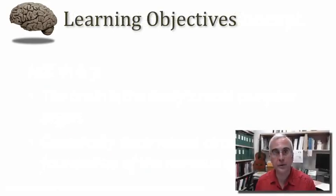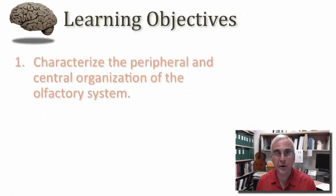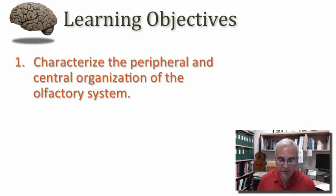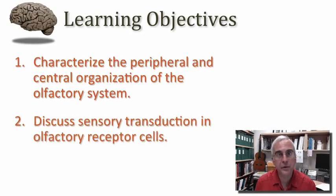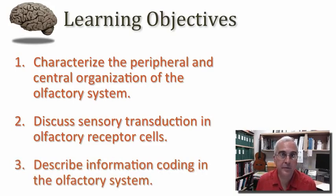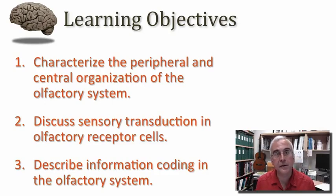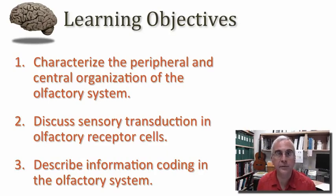My learning objectives for you in this session are threefold. I'd like for you to be able to characterize the peripheral and central organization of the olfactory system. I'd like for you to focus on the critical issue of sensory transduction that's been central to all of our considerations of sensation so far in the course, and I'd like for you to get a feel for how information is actually encoded in the olfactory system. The chemical senses reveal perhaps some surprising means for coding information that seem quite different than coding mechanisms seen in somatic sensation, vision, and even audition.